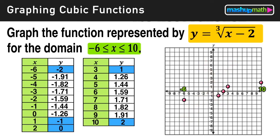The graph of a cube root is curved, so we need to connect these points with a curved line. So now we have constructed the graph of the function y equals the cube root of x minus 2 over the domain of negative 6 to 10.